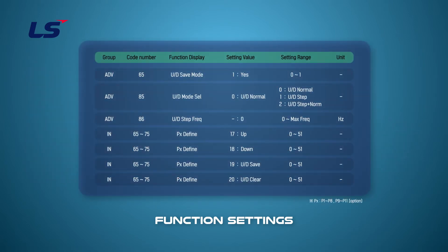Next, we will see how to save the operating frequency. By default, frequencies designated by Up or Down operation are not saved. However, if ADV 65 is set to Yes, the Up-Down function allows the operation frequency to be stored in memory when the Run command is turned off or tripped during constant speed operation, or when the power is cut off.